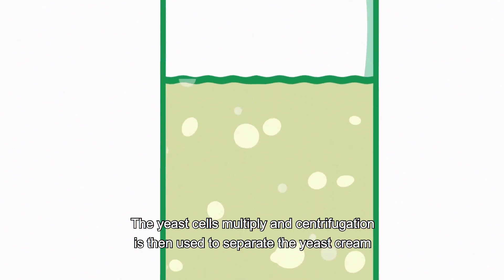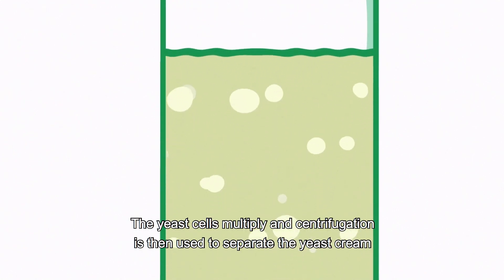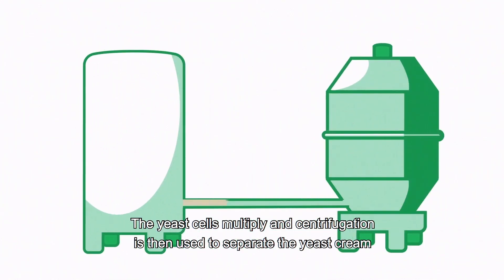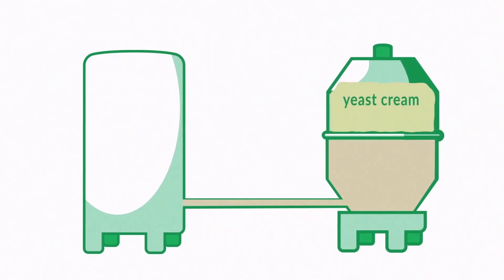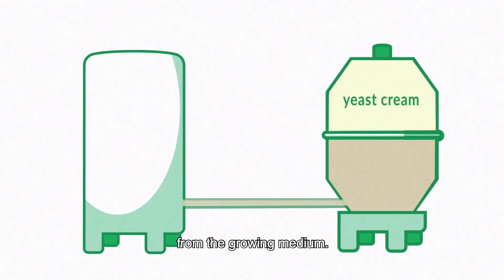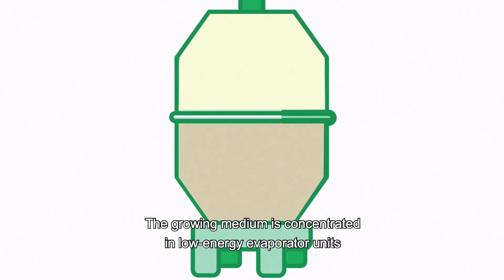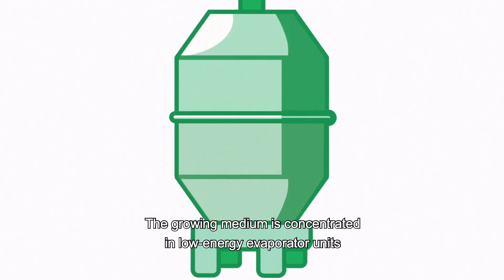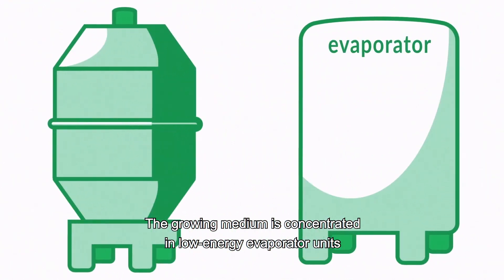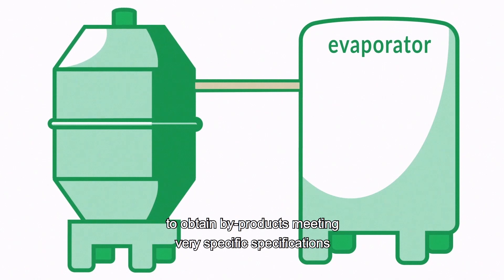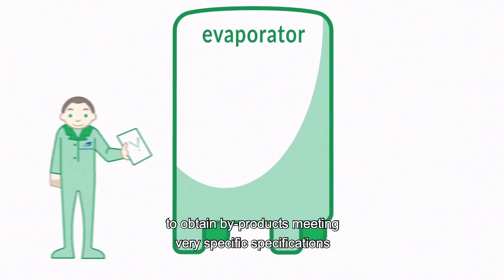The yeast cells multiply and centrifugation is then used to separate the yeast cream from the growing medium. The growing medium is concentrated in low-energy evaporator units to obtain by-products meeting very specific specifications.